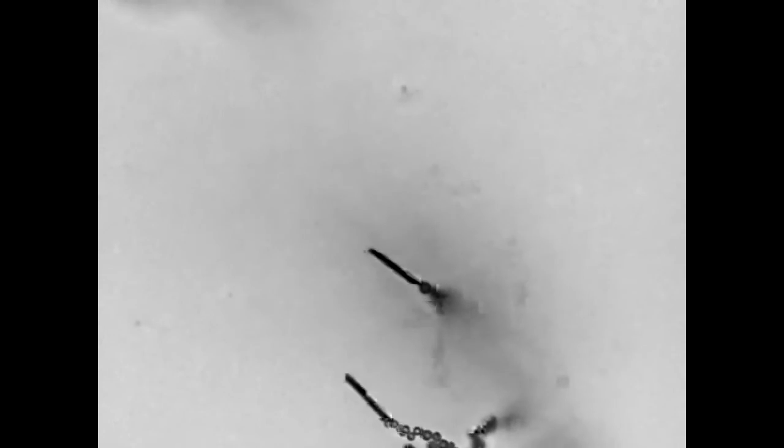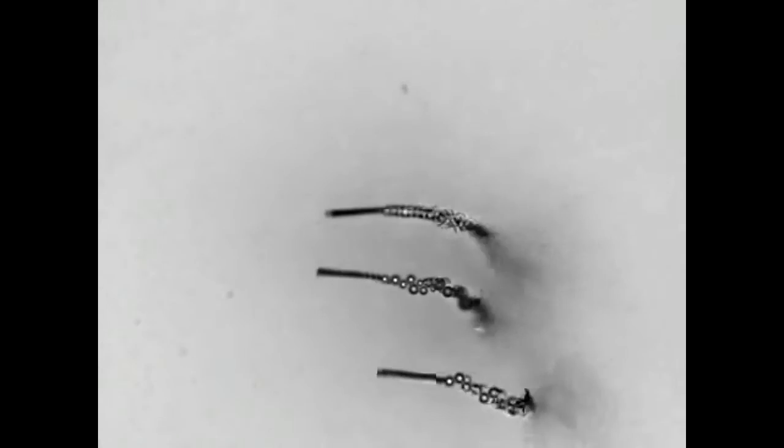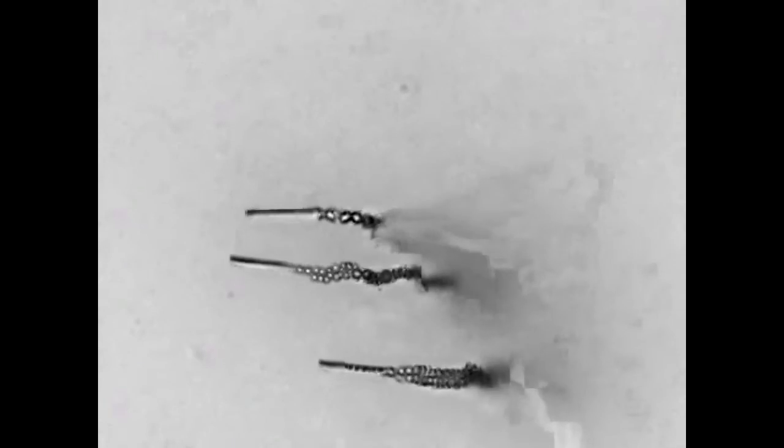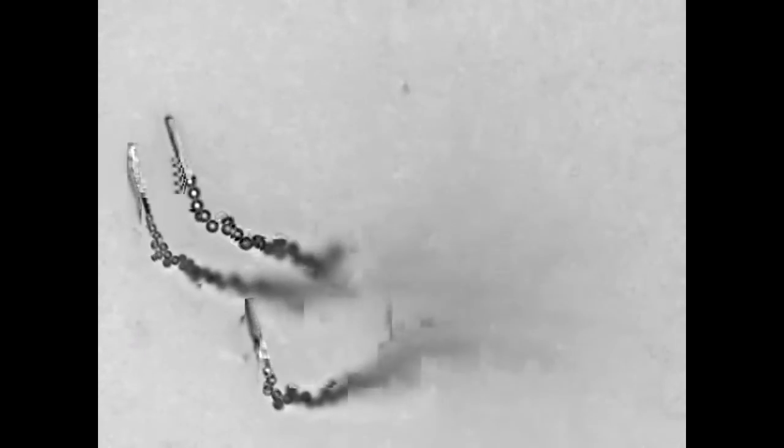How does it work? These micro-rockets draw in fuel from their surrounding medium through their smaller end for chemical reactions within their catalytic or reactive hollowed interior. These reactions produce gas bubbles, which nucleate and are ejected out of the larger end of the rocket.